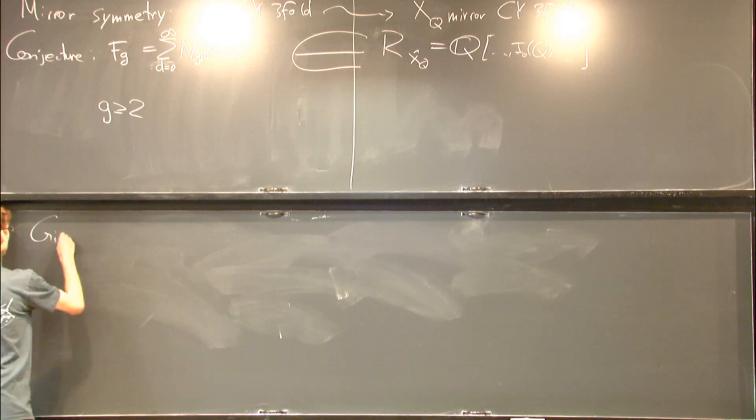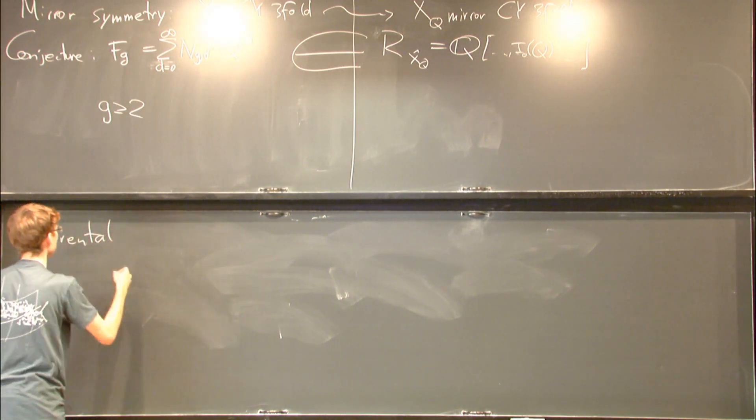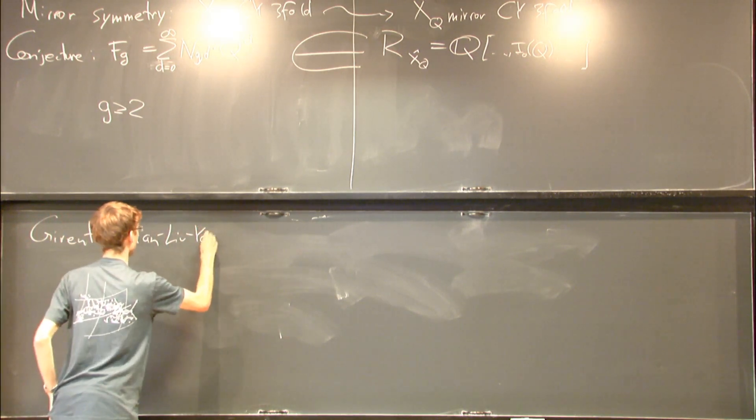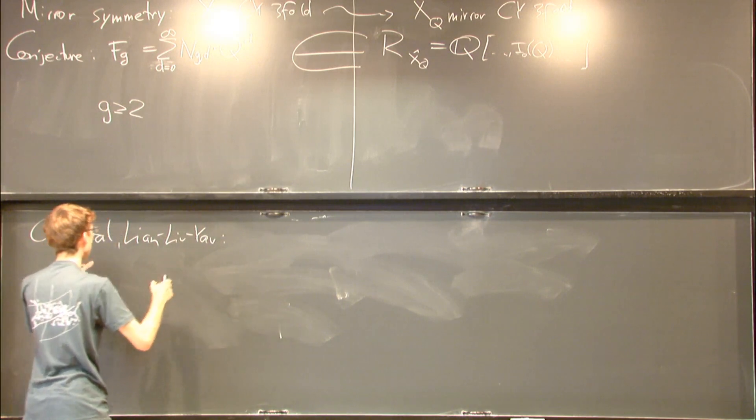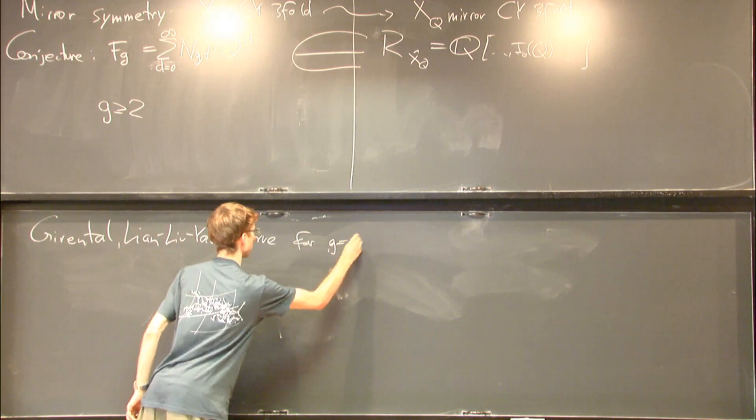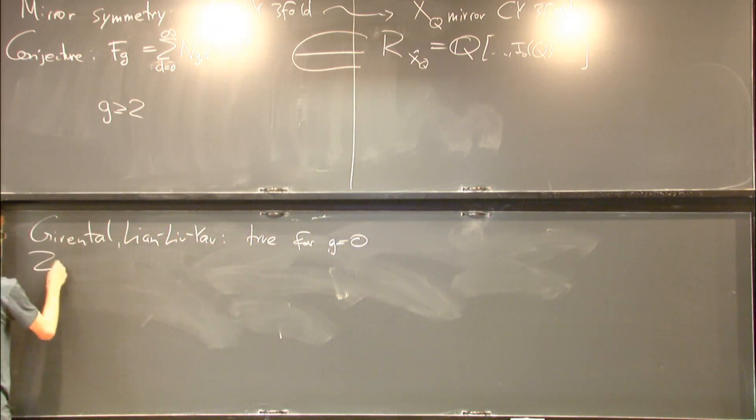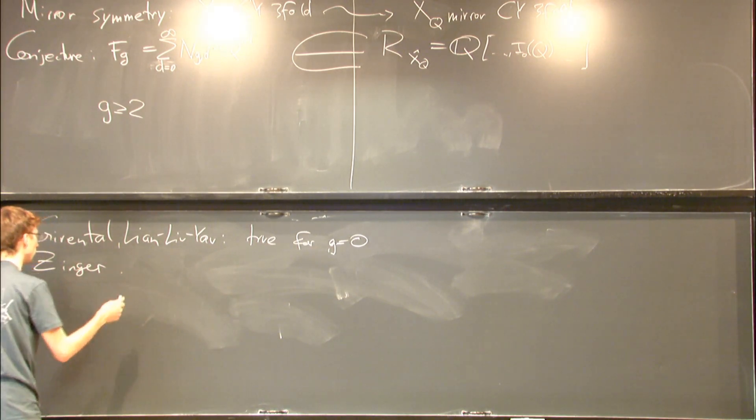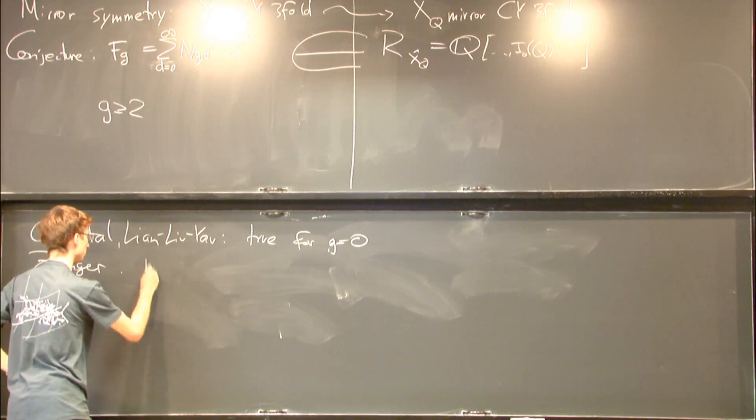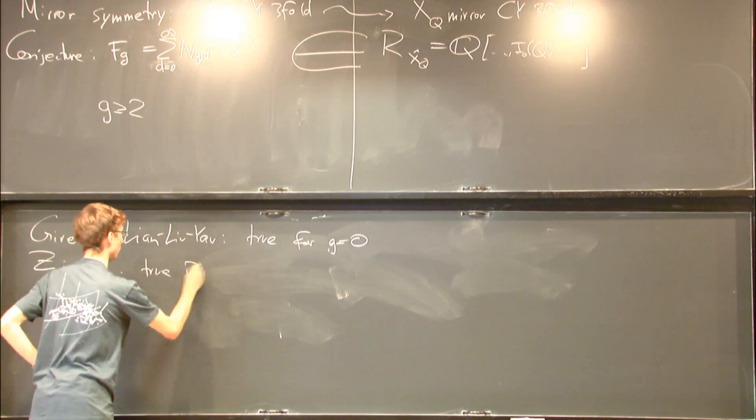It took a long time in mathematics to resolve them. The first case, where the genus is zero, was resolved by Givental and Lian-Liu-Yau in the mid-90s. It took about 10 more years, until the mid-2000s, for Zinger and a team of several other mathematicians to resolve the conjecture for genus 1.